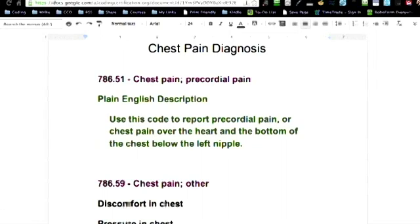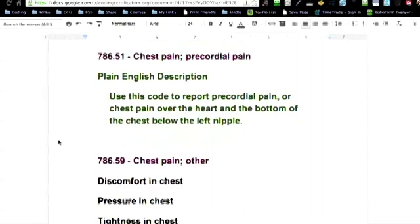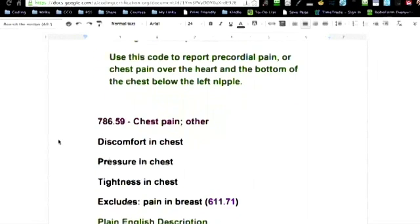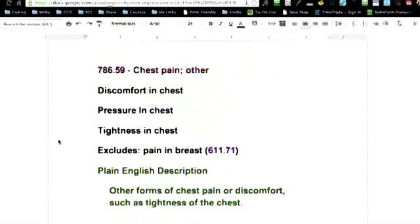Now on 786.59, chest pain other, and that's where we get into that other - discomfort in the chest, pressure in the chest, tightness in the chest, and this is going to exclude pain in the breast and they give you the code for that. So other forms of chest pain or discomfort such as tightness of the chest.